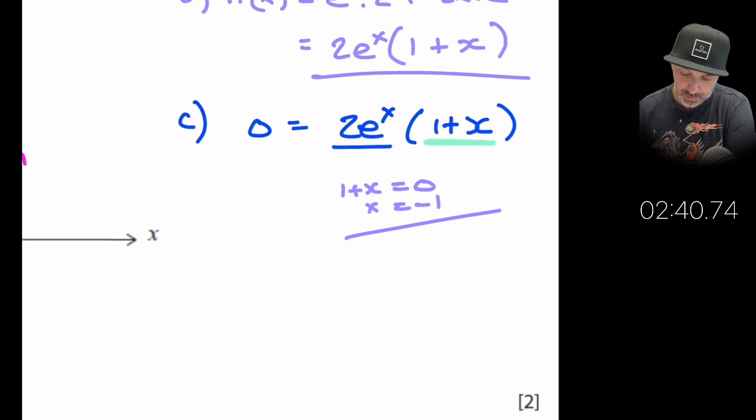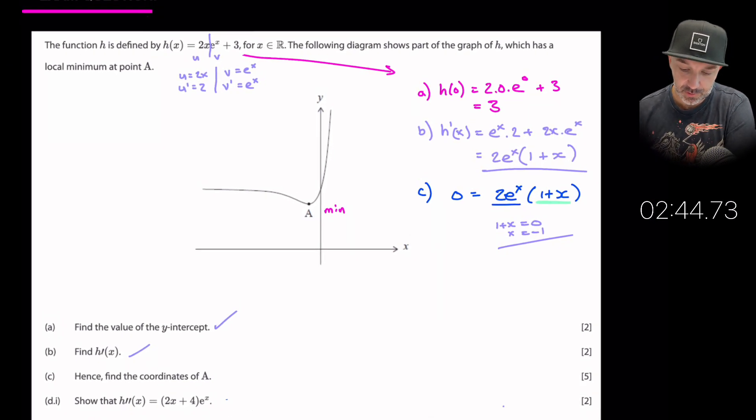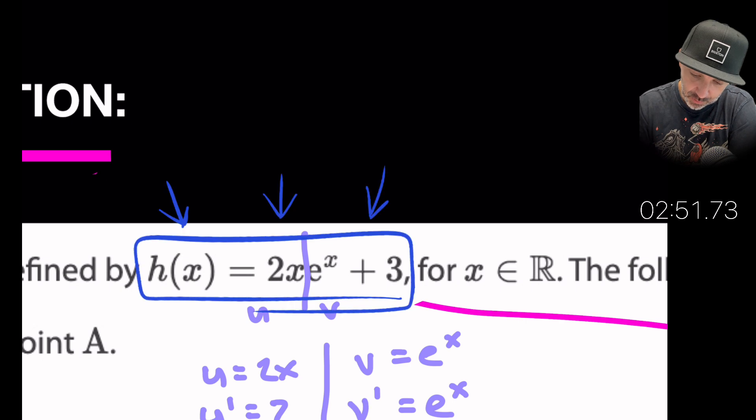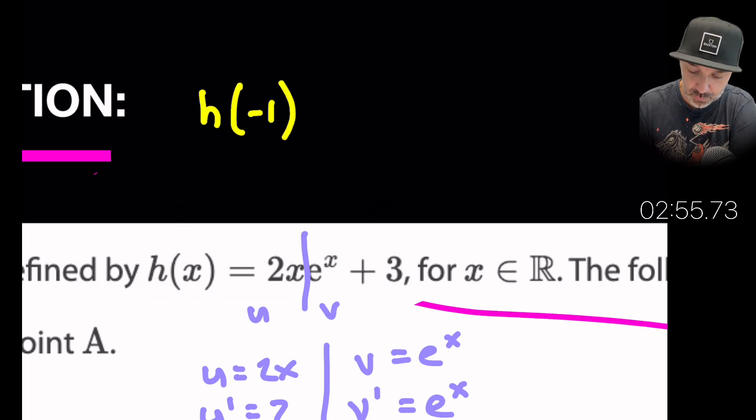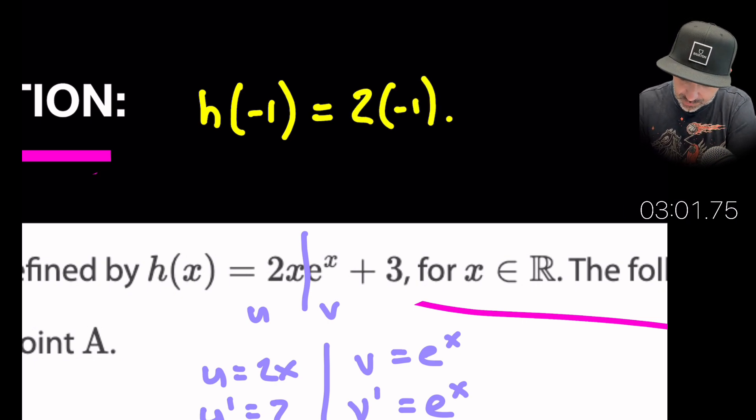Okay now it asks us to find the coordinates of A. So if we've got the value of x equals minus one we need to substitute that into the original expression. So the original expression was this up here. So I'm going to just write that down. What is h when we substitute minus one into it? So this will give us the y coordinate. So this will be two times minus one times by e to the minus one. Okay plus three.